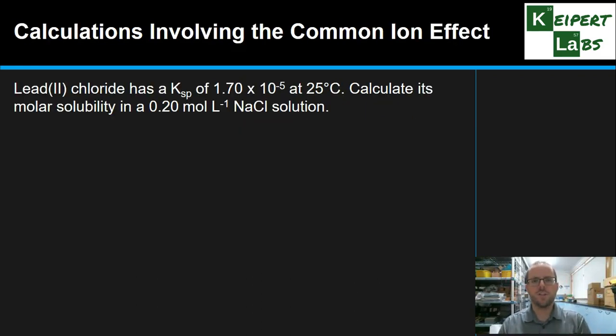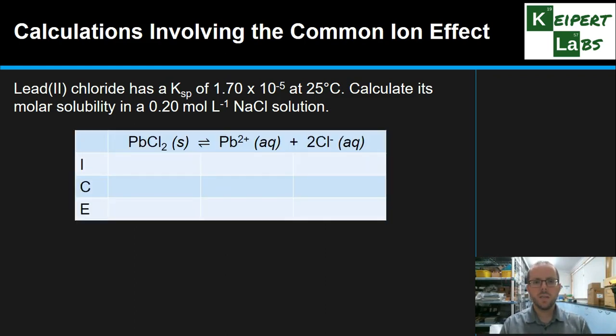So let's look at an example of a calculation where the common ion effect will have an impact. Looking at lead chloride, Ksp of 1.70 times 10 to the minus 5 at 25 Celsius. So let's look at its molar solubility when we're trying to dissolve it in a 0.20 mole per litre sodium chloride solution. Notice that the chloride ion is in common. So let's set up an ICE table. For the dissolution of lead chloride, we get one lead ion and two chloride ions for every mole of lead chloride that dissolves.